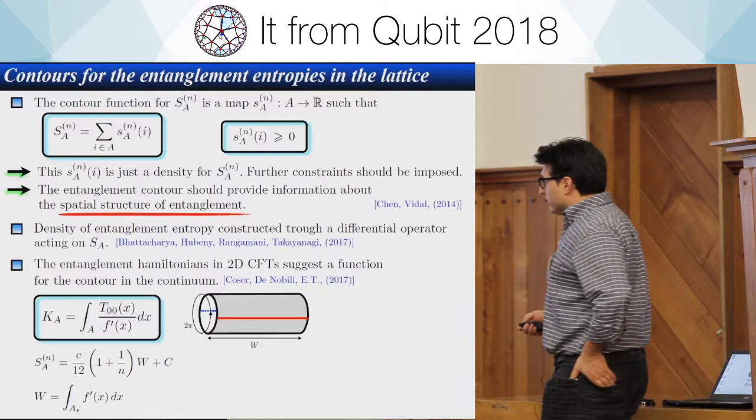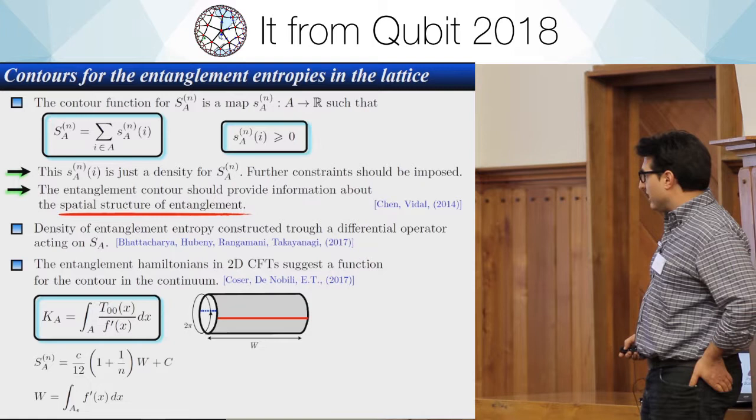Mukund, Veronica, Tadashi, and Bhattacharya studied the question of defining the density of entanglement entropy in QFT, using the construction of strong sub-additivity to prove the C-theorem and F-theorem. They defined in QFT the density of the entanglement Hamiltonian by applying a differential operator on S_A for the entanglement entropy.